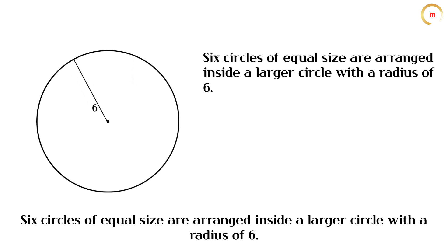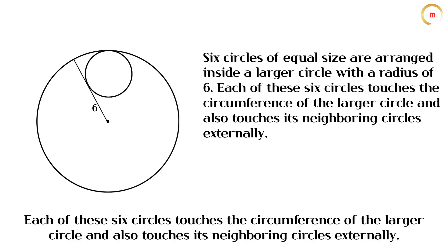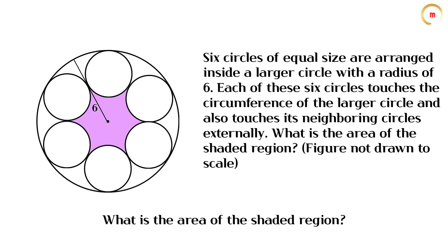Six circles of equal size are arranged inside a larger circle with a radius of 6. Each of these six circles touches the circumference of the larger circle and also touches its neighboring circles externally. What is the area of the shaded region?